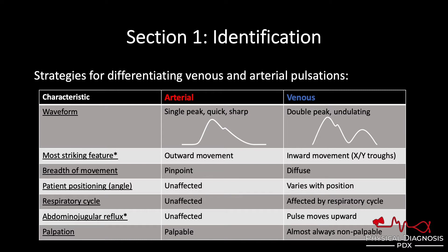The venous pulse, on the other hand, will be affected by those things. In terms of patient position, if you recline a patient back to supine, the pulse climbs up the neck; if you sit them up, it moves down. With inspiration, we decrease intrathoracic pressure, causing the column of blood to be drawn toward the heart, so JVP typically moves down the neck. The opposite — a paradoxical rise in JVP with inspiration — is known as Kussmaul's sign. Movement in concert with the respiratory cycle argues for a venous pulse. The venous pulse also moves up the neck with abdominal pressure. Finally, the arterial pulse is palpable, whereas the venous pulse is almost always non-palpable.